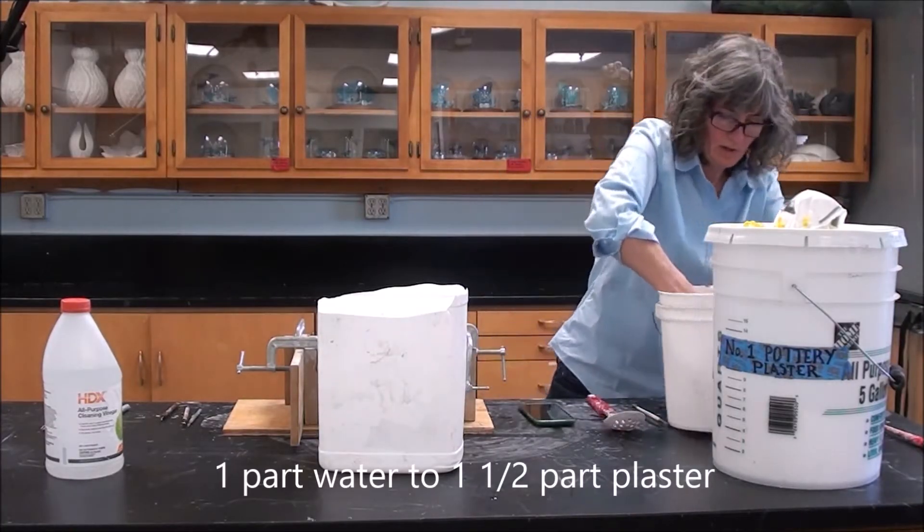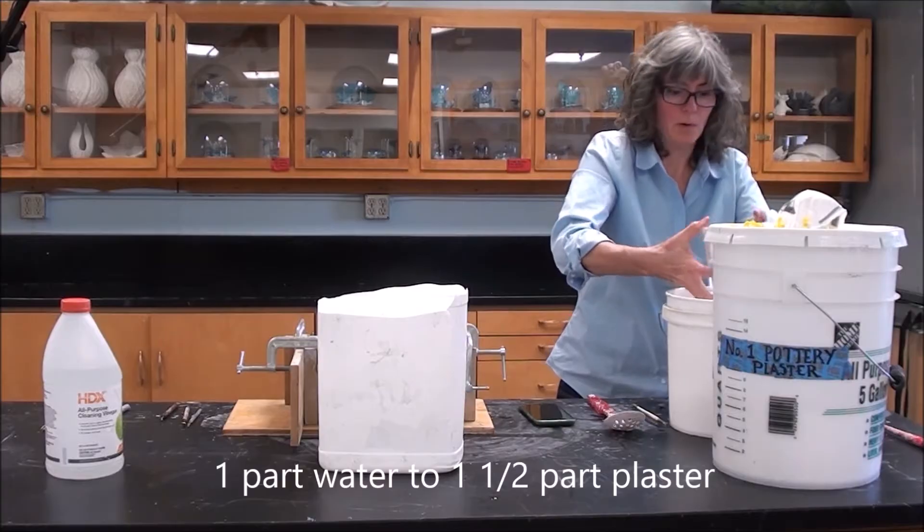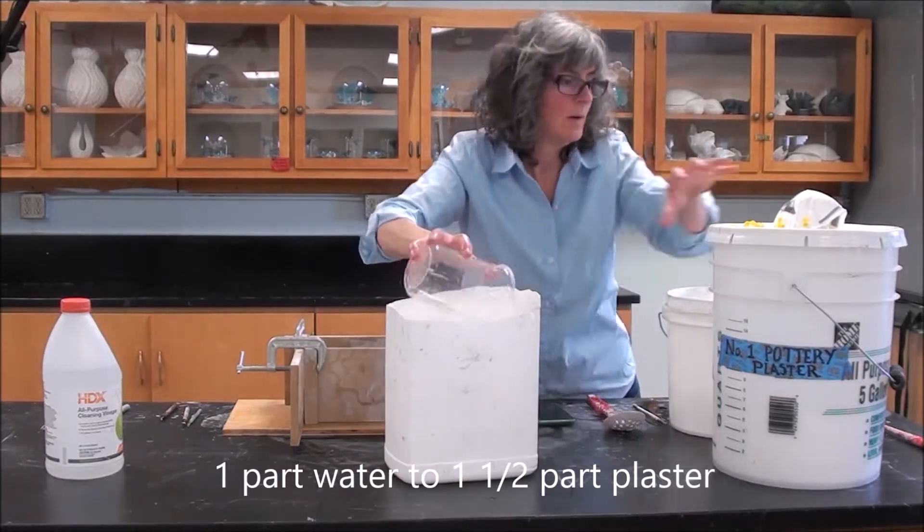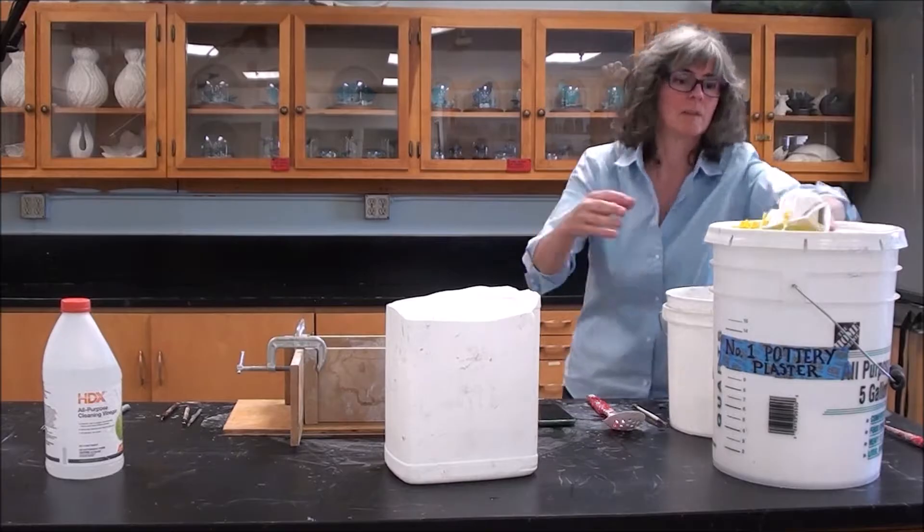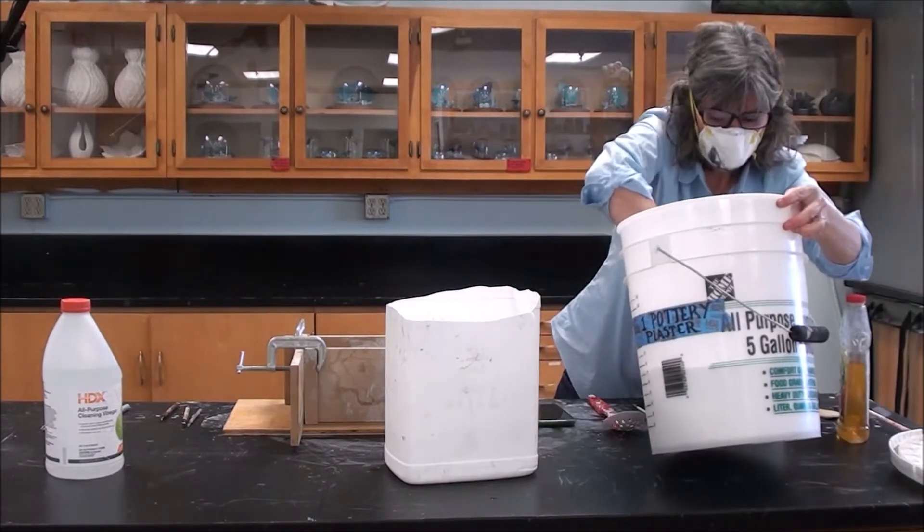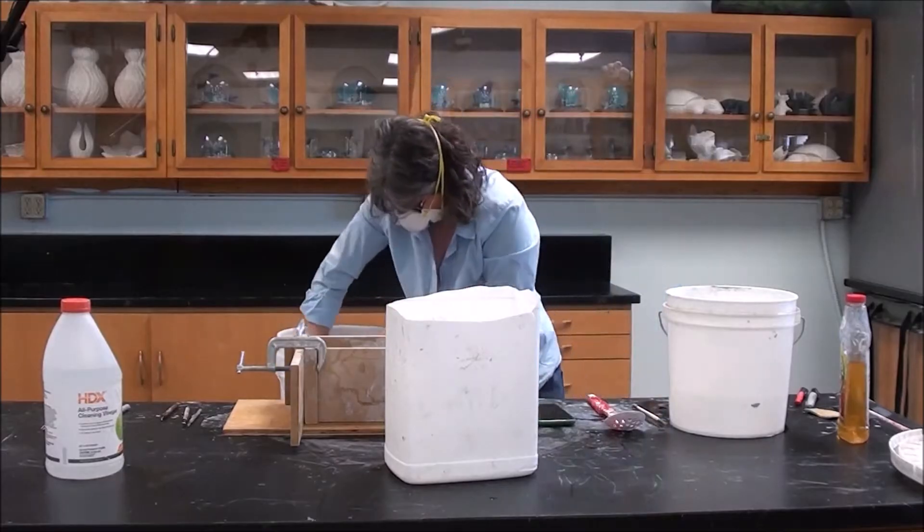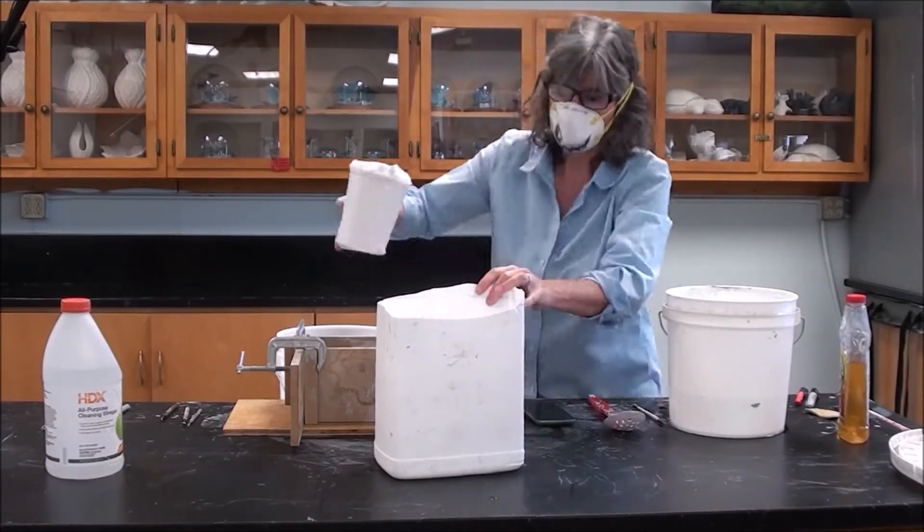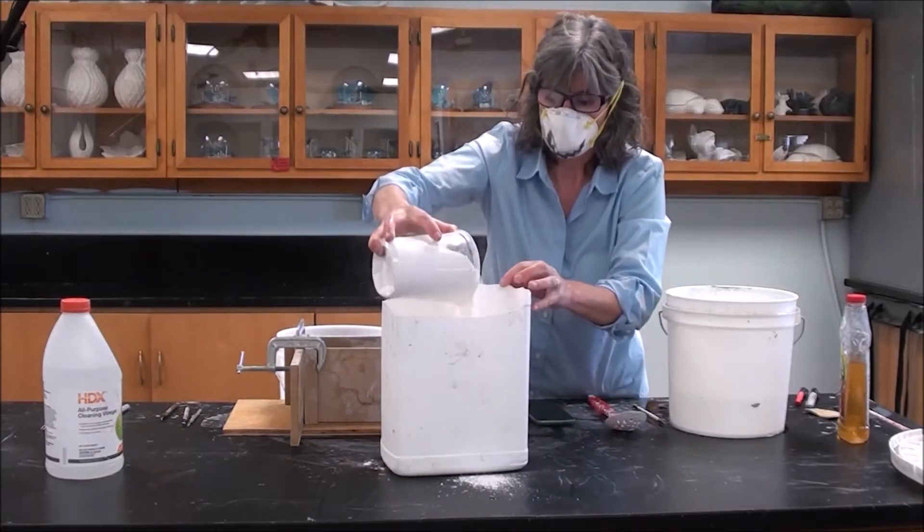I prefer the volume method when I am mixing my plaster. The ratio is one part water to one and a half parts plaster. You always start with the water first, and you always use cold water. Warm water speeds up the process, meaning your plaster will set up more quickly.